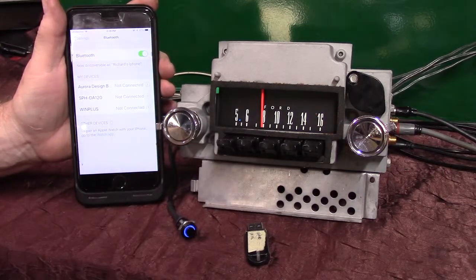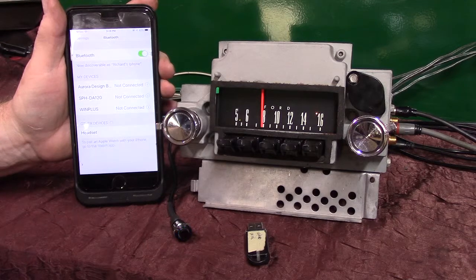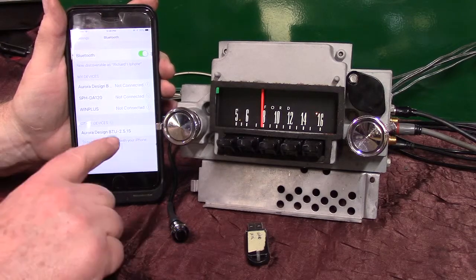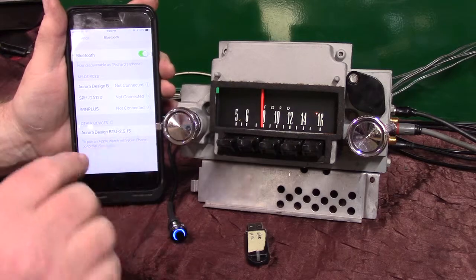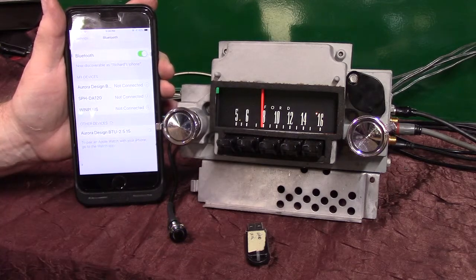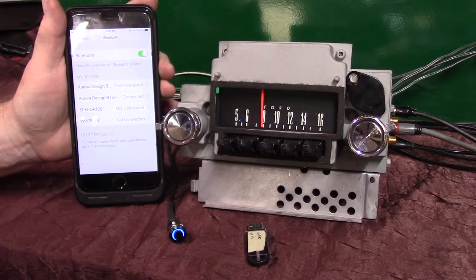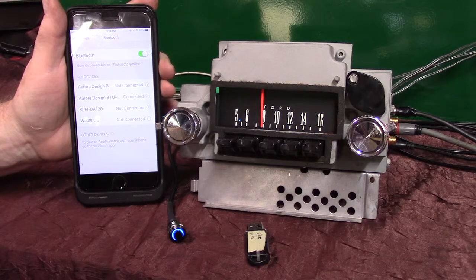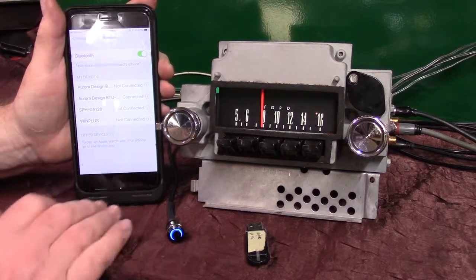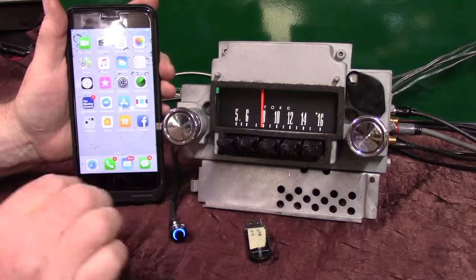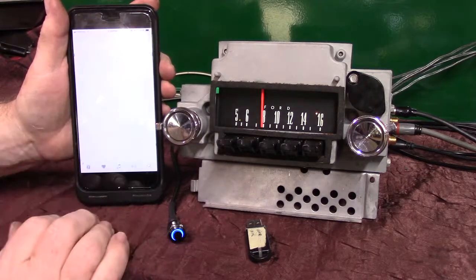Bluetooth ready to pair. Showed up on our phone. All we got to do is tap on it. She'll tell us when it's done. Pairing completed. Bluetooth connected. All right, we're connected up. You notice the little button's lit up. Let's go to music.